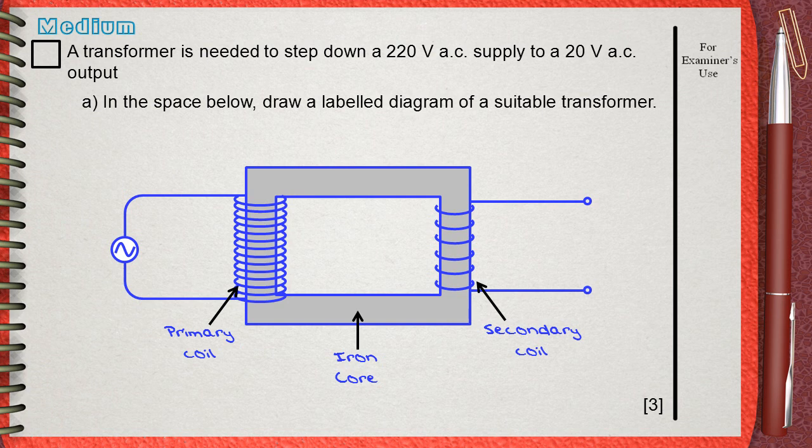In our case we have an input of 220V. The transformer gives an output of 20V. This is a ratio of 11 to 1. So choose your number of turnings according to this ratio. I will say 4400 turns on the primary and 400 turns in the secondary.